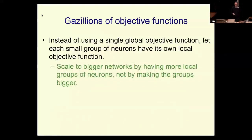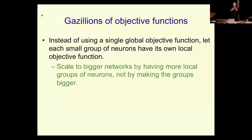One way around global backpropagation is to have gazillions of local objective functions. The way we scale things: a little neural net with its own objective function works fine, but a big neural net trained the same way doesn't. What if you had lots of little neural nets, each spatially local with its own objective function? You're never trying to learn lots of parameters all at once from one objective function.